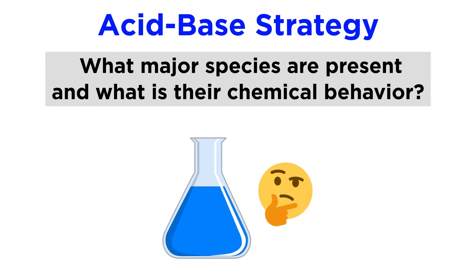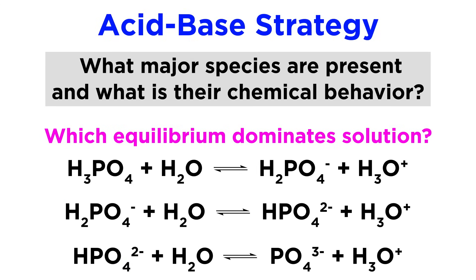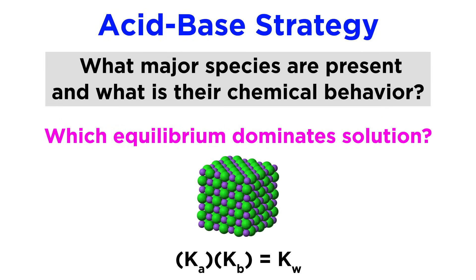Then, finally, we have to ask which equilibrium dominates the solution. If we have a weak acid or base, there is a forward and reverse reaction — which one dominates the solution? If we have a polyprotic acid, there are multiple successive ionizations, each of which has its own associated equilibrium. Which of these dominates the solution? Is it exclusively the first ionization, or do subsequent ionizations matter in terms of any relevant calculations? If we have a salt consisting of an acidic cation and a basic anion, there will be two competing equilibria. Which of these will dominate? How do we use the relevant Ka and Kb values to determine this?